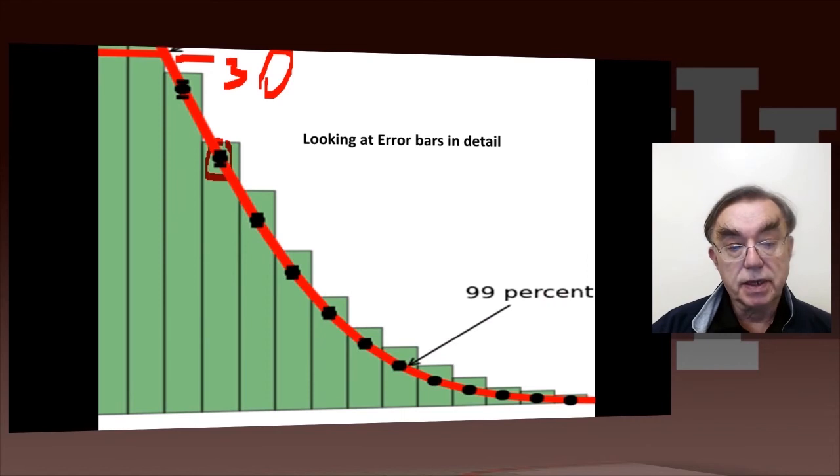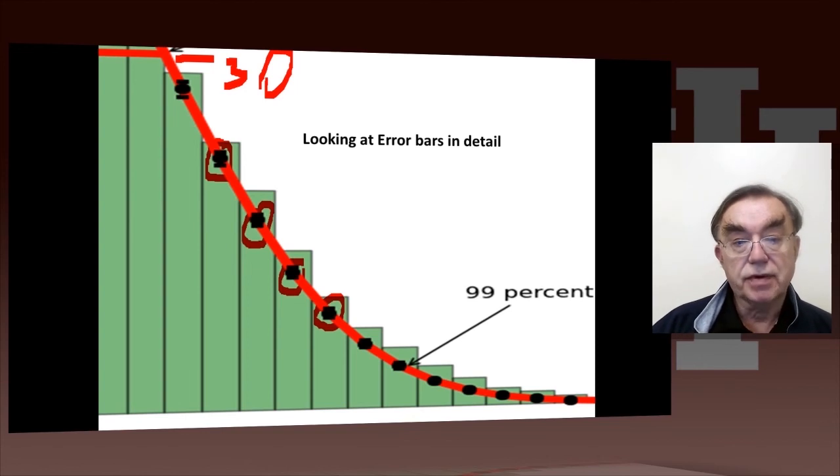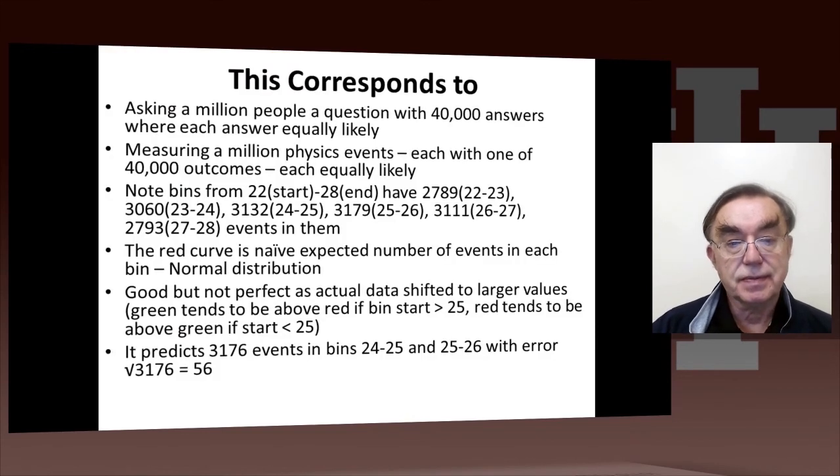We have the real estimate of the errors, and you can see the green curve is above the red curve by an amount much greater than the errors. So there is a systematic shift here, which is just not important. Because we never look at things in this detail. You tend not to look at things in this detail. You don't usually take a million people in your survey and get such good statistics. As I said, we would get this if we asked a million people a question with 40,000 answers, or if we took a million physics events, each with 40,000 outcomes, each equally likely.